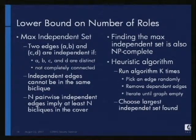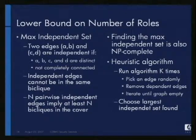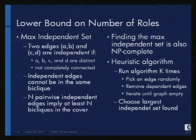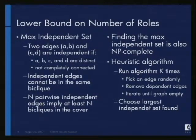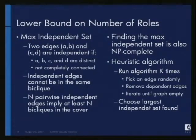Our approach is to frame this as a max-independent set problem. Suppose I have two edges in my original bipartite graph, (A, B) and (C, D). We say two edges are independent if all four vertices are distinct, and they're not completely connected — meaning the edges from A to D and from C to B also don't exist in that four-vertex subset. So independent edges can't be in the same biclique, because if they were in the same biclique they would be fully connected. Therefore if we can find n pairwise independent edges, we know there must be at least n bicliques in the biclique covering of this bipartite graph.